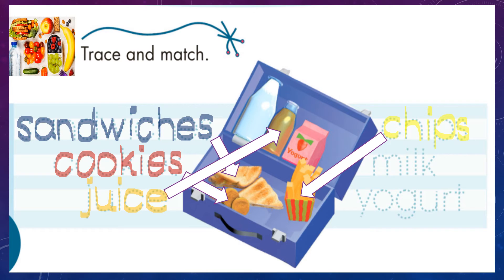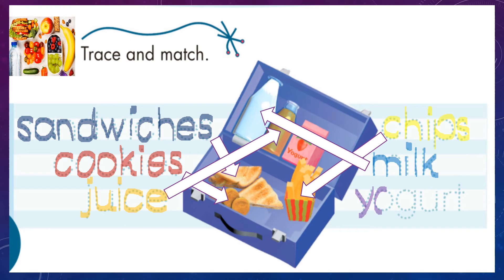We continue with milk. Tan deliciosa. Milk. Who can tell me what is milk? Very good, my little kids — milk, leche. Excellent. We continue with yogurt. Excellent — who can tell me what is yogurt? Ahora vamos a terminar de trazar la palabra y a unirla con la imagen que corresponde. Yogurt — el yogur. Very good, my kids. We continue.